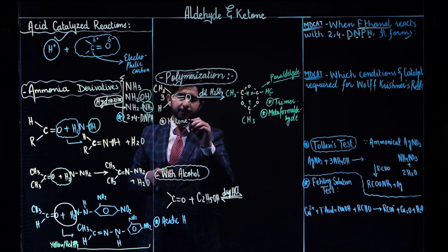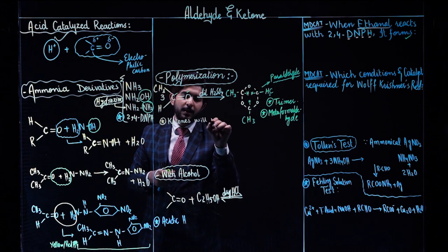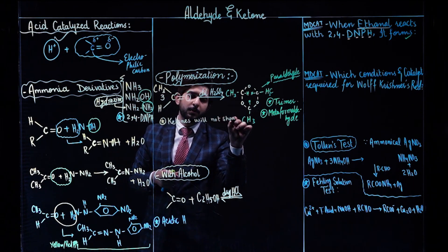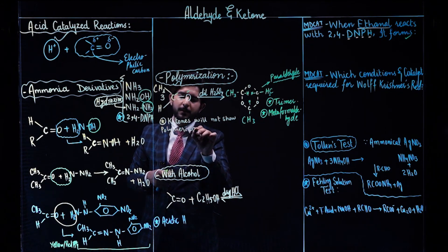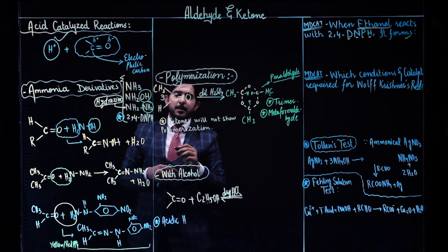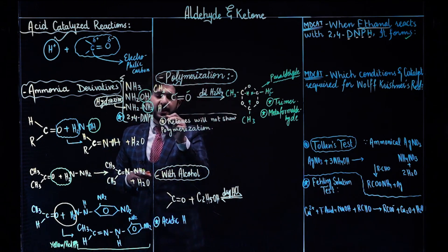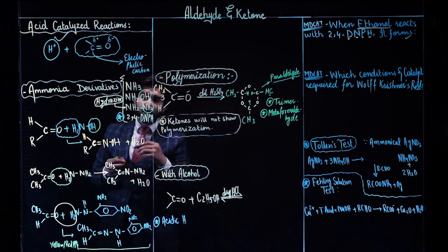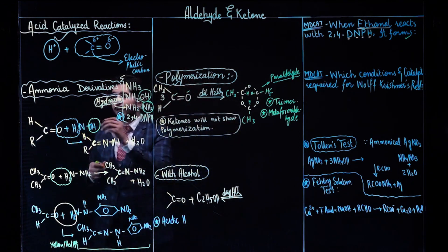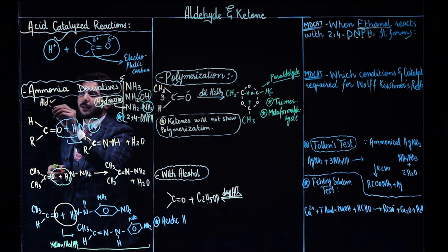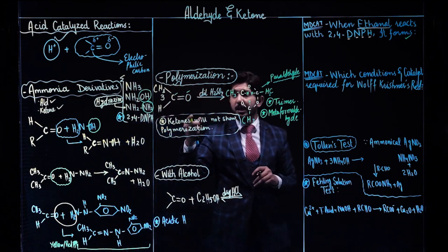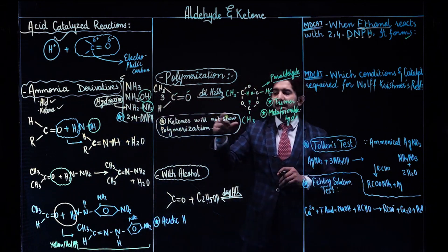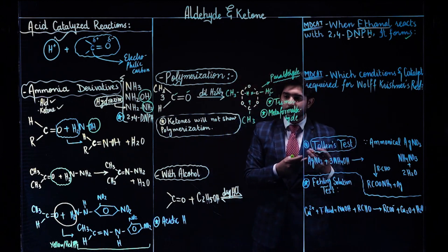Ketones will not show the polymerization process — this is the key point. Aldehydes will show this reaction, but ketones will not give you the polymerization product. With ammonia derivatives, both aldehydes and ketones can show the reaction. In polymerization, only aldehydes will show the polymerization process; ketones will not give you the polymerization product.